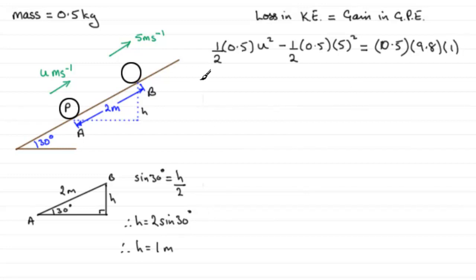If we clean up both sides, we've got ½ of 0.5u², so we have 0.25u². Working out this term here, it turns out to be minus 6.25.